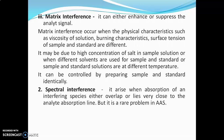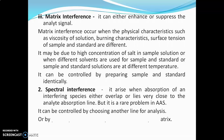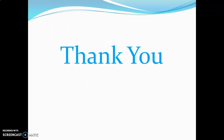Spectral interference arises when absorption of an interfering species either overlaps or lies very close to the analyte absorption line, but this is a rare problem in atomic absorption spectroscopy. It can be controlled by choosing another line for analysis or by prior separation of the analyte from the sample matrix. I hope you understood all these things — thank you for watching.